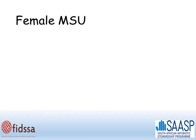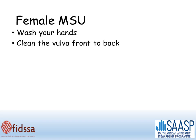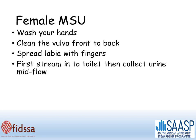To instruct a female on how to collect an MSU, instruct her to wash her hands, to clean the vulva from front to back, and spread the labia with her fingers. The first stream of urine should go into the toilet and then she should collect the sample mid-flow.